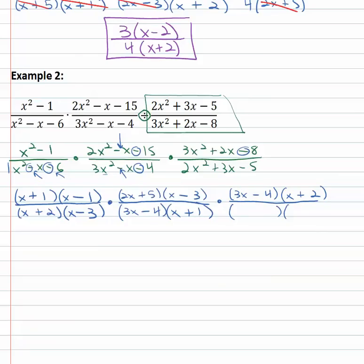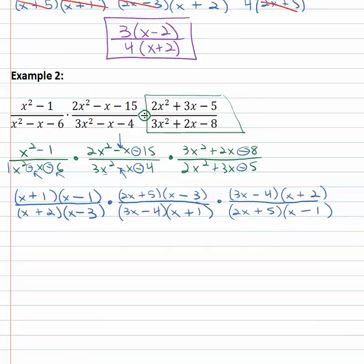In the last denominator, 2x squared is two x times x and we want to get to five — that's probably five times one. Different signs because of the negative: on the outside two x, on the inside five x — can we get positive three? Five minus two, so minus on the outside and positive on the inside. Now after all that factoring we get to divide out common factors: x plus one in both numerator and denominator, x minus one, two x plus five, x minus three, three x minus four, and x plus two. Everything divides out.